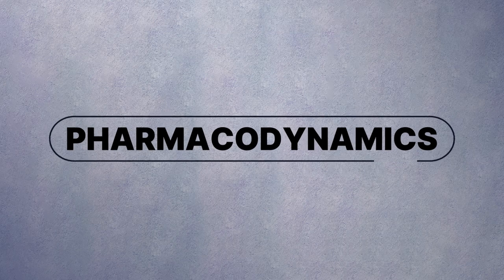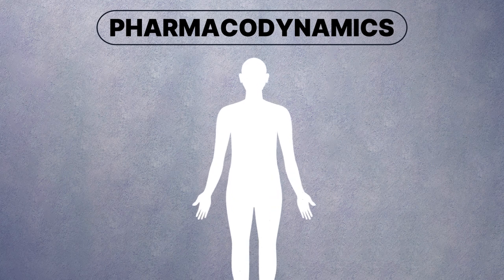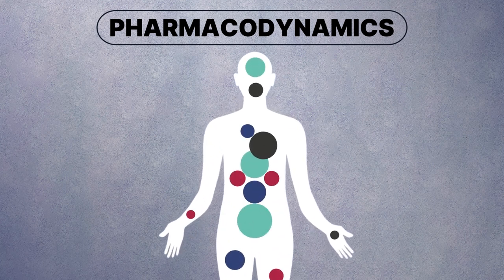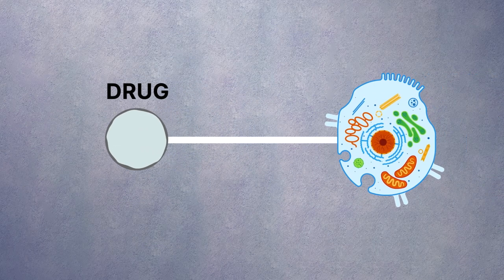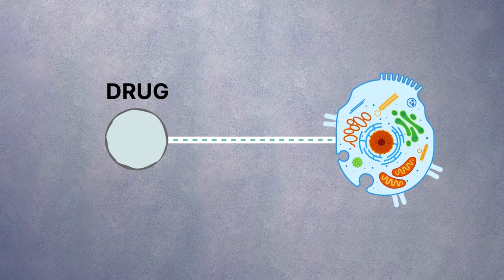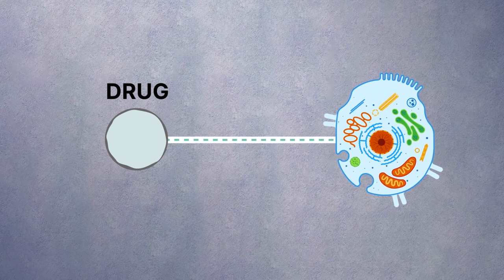Moving on to pharmacodynamics, which explores what the drug does to the body. This field studies the mechanisms of drug action and the relationship between drug concentration and effect. Receptor binding. Drugs exert their effects primarily through binding to specific receptors on cells. This binding can activate or inhibit normal cell functions, depending on the drug's design.